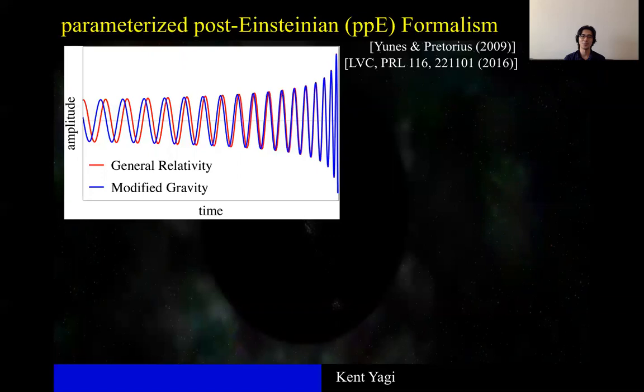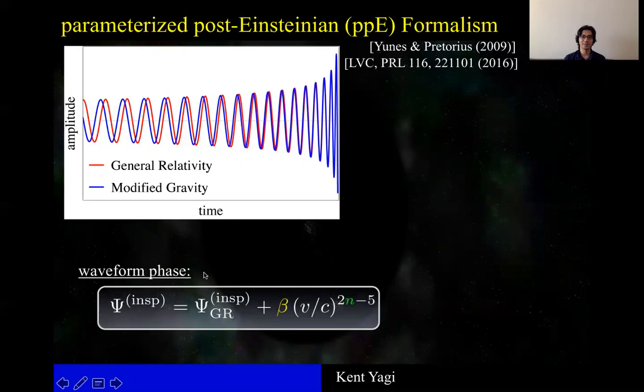And the idea of this ppE formulation is quite simple. Take the GR predicted waveform phase and add one correction term that captures the non-GR effect. v here is the relative velocity of two components, while beta is called ppE parameter that controls the overall magnitude of the correction term, while the exponent n tells us at which post-Einsteinian order the correction enters.